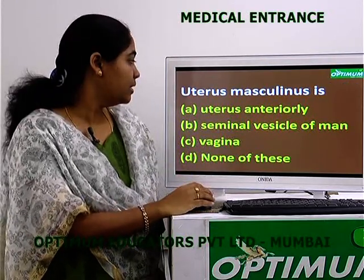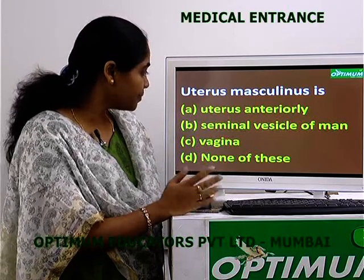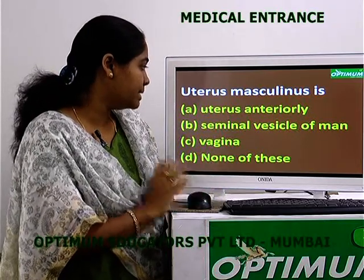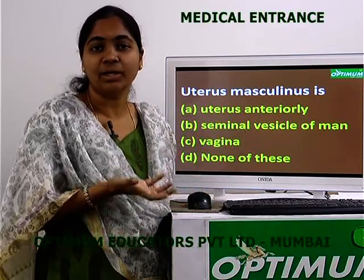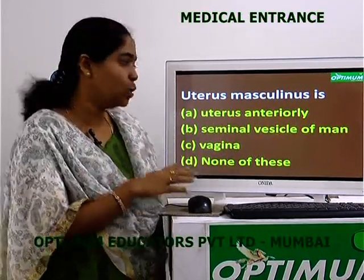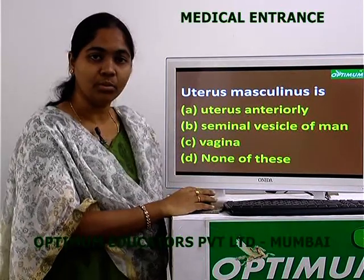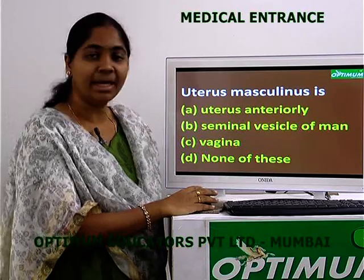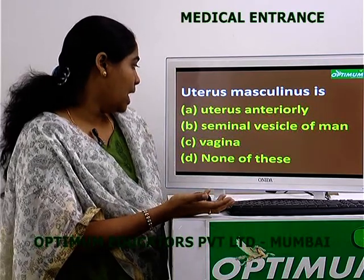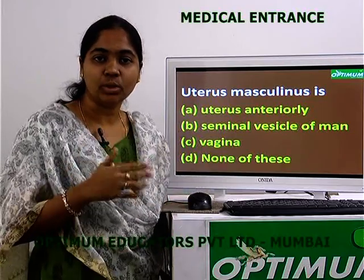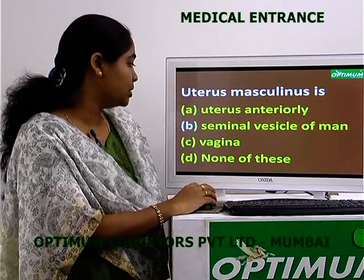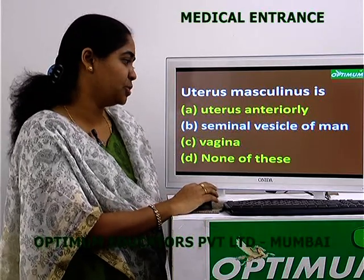Question 2: Uterus masculinus is — meaning the male uterus. Options: uterus anteriorly, seminal vesicle of man, the vagina, none of these. Uterus anteriorly refers to a change in positioning, which does not apply. Vagina is part of the female reproductive system. The correct answer is the seminal vesicle of man.